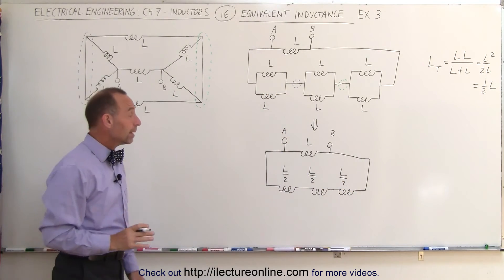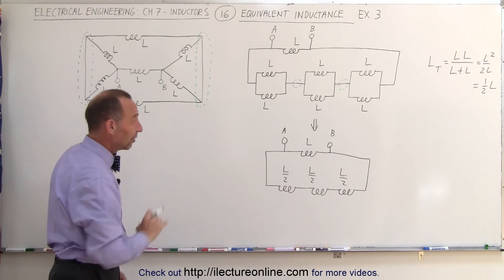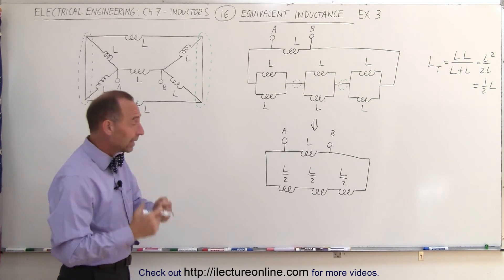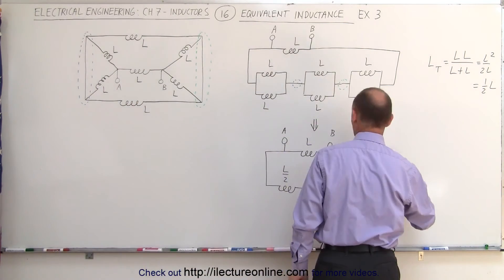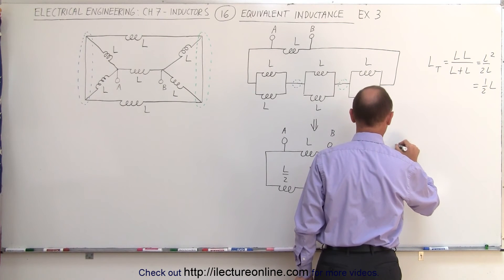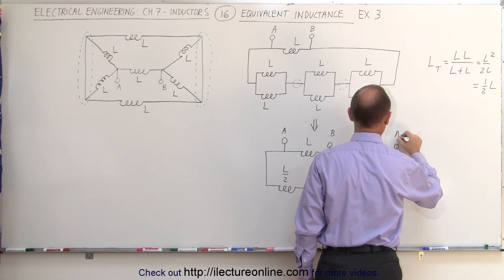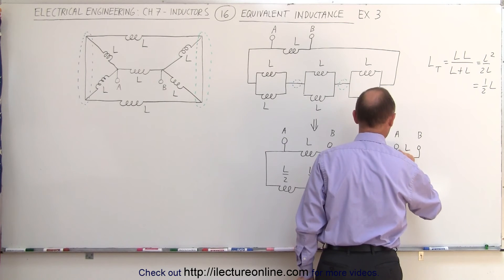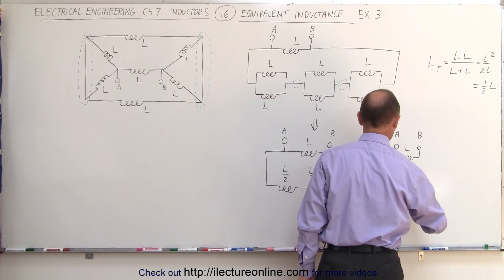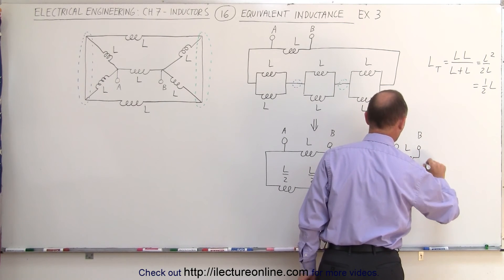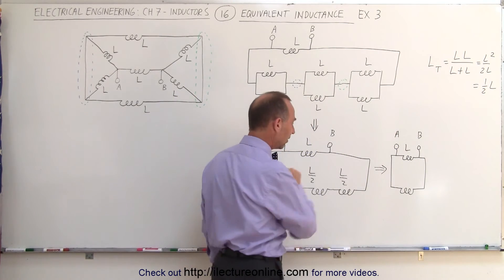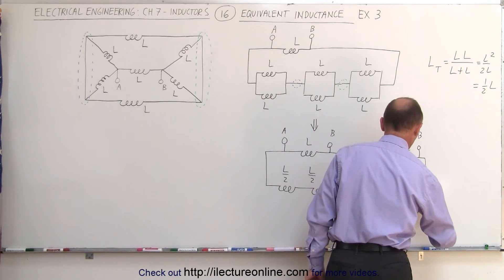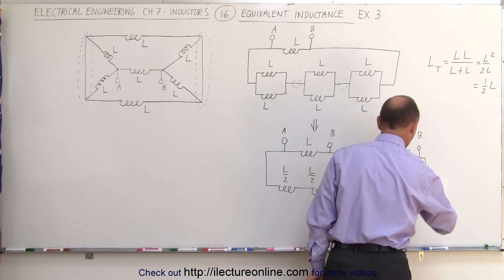Now those L/2 inductors can be combined because they're in series. When we add series inductors, we simply add the inductances. So the equivalent circuit has the inductor L directly from A to B, and then the series path combines to a single equivalent inductor of 3/2 L.